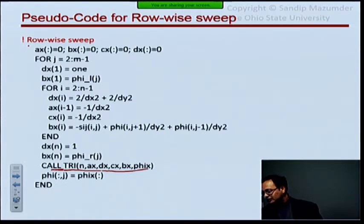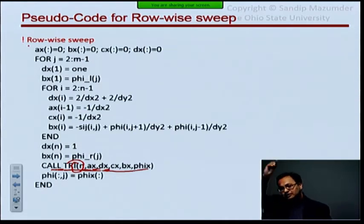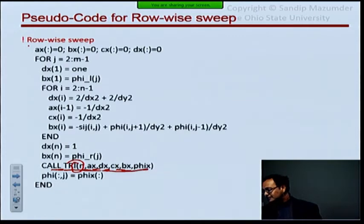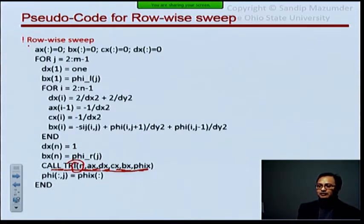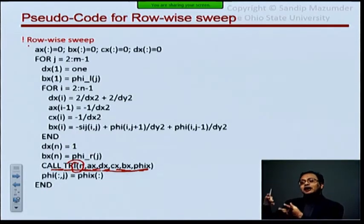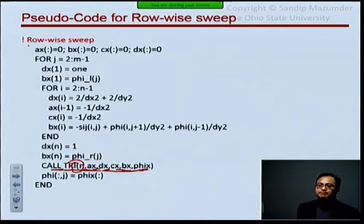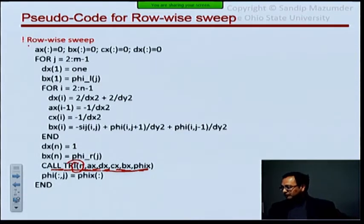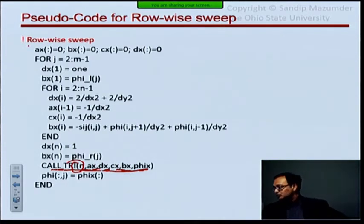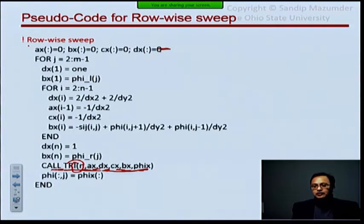All it does is: you feed in the number of equations, the three diagonals A, D, C, the right-hand side vector B, and phi_x is your solution output. First, reset A, B, C, and D in the tridiagonal matrix all to zero so that anything not overwritten stays as zero. For example, we have a matrix where I put a one in the diagonal and a zero next to it for boundary conditions — that zero is C1, so if I've filled C with zeros already, I don't need additional code to set C1 = 0.